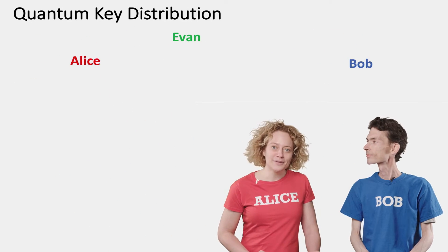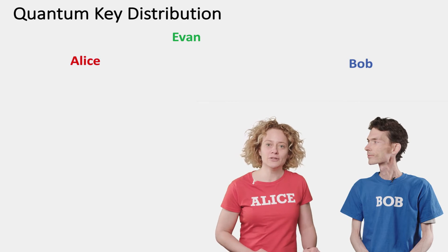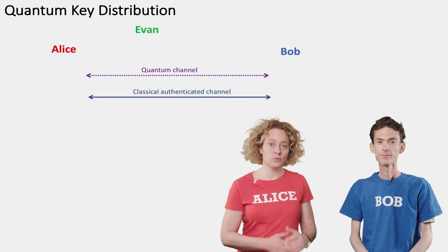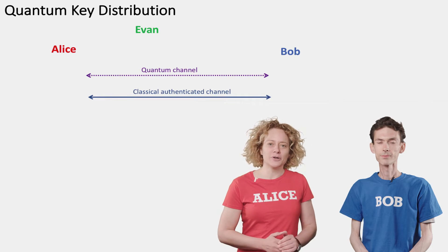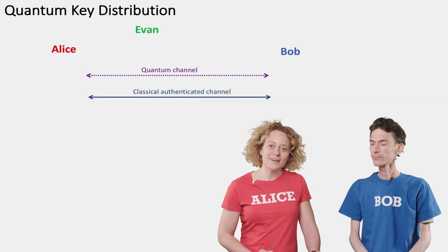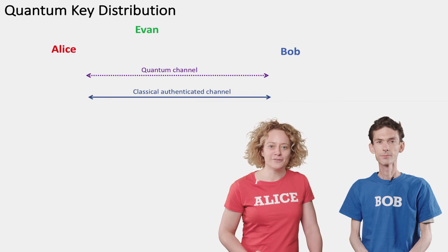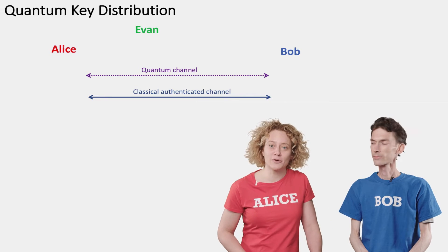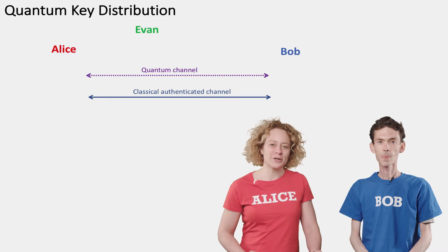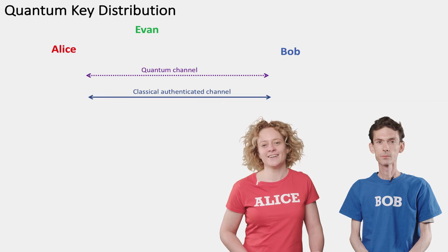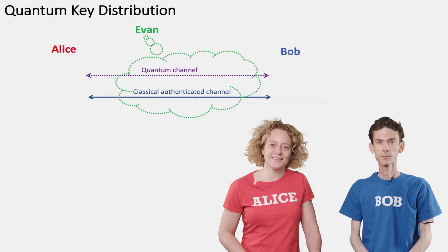Alice and Bob want to communicate. Possibly Alice wants to send Bob pictures from a party last night, or maybe she wants to send him blueprints of a revolutionary new machine, or maybe Bob is a bank and Alice needs to send him her financial details. Alice and Bob are worried that someone wants to listen in. We are worried about an eavesdropper — let's call her Eve or Evan — that may want to intercept their communication. Eve is a formidable adversary whose entire mind is bent on reading the secret messages communicated by Alice and Bob.